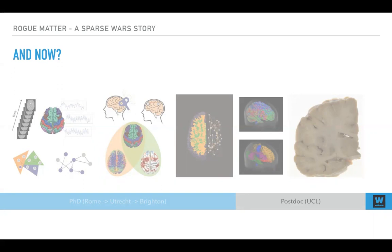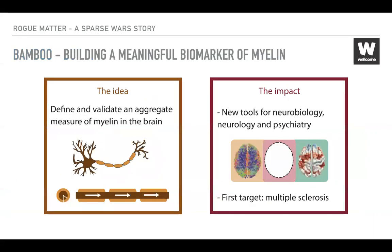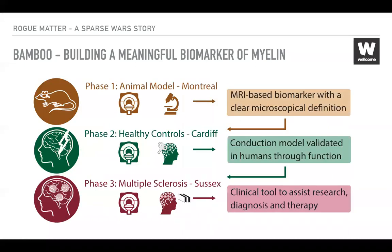One and a half years ago, I started writing a fellowship proposal and got it funded. I called my project BAMBOO — Building A Meaningful BiomarkerOf mYelin. The idea is to understand what we can actually say about myelin estimated from MRI, and what it can tell us about the neurophysiology of the brain in vivo. This project is structured in three phases — the first one involving work with animal models.